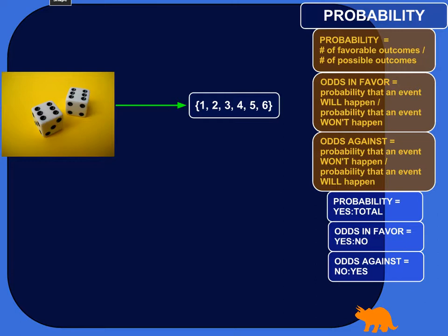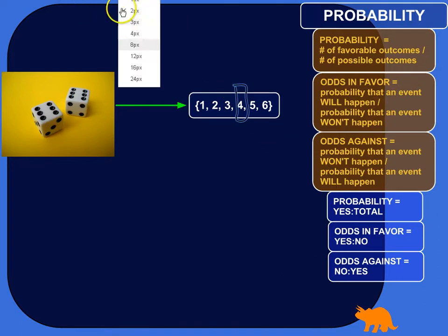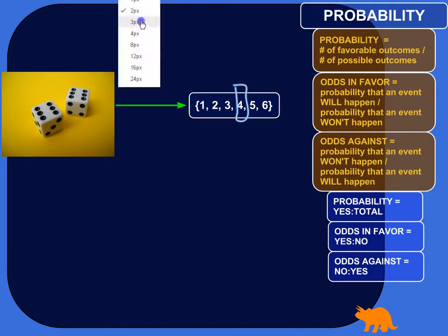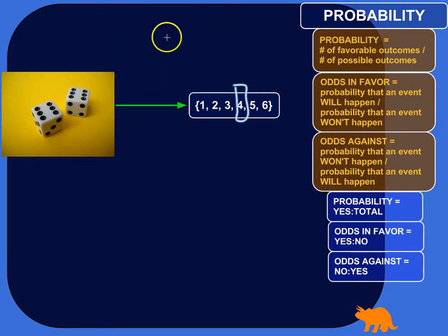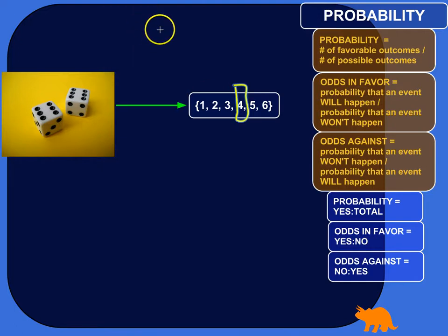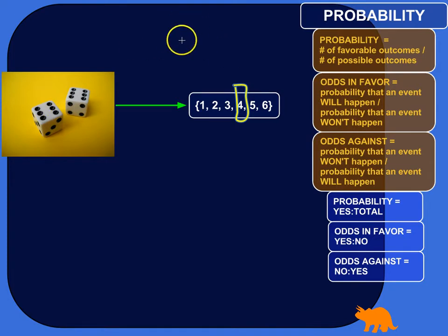For example, let's look at rolling a die. Our favorable outcome is rolling a four. The number of favorable outcomes is only one for rolling dice, so the number of favorable outcomes would be one.